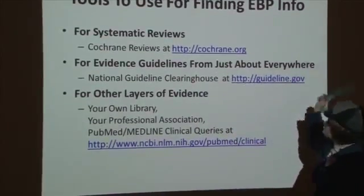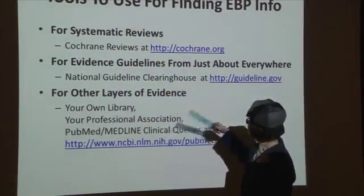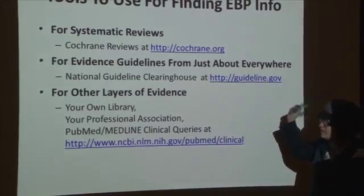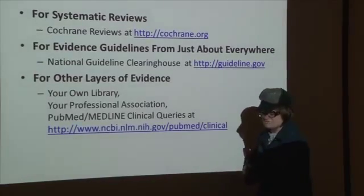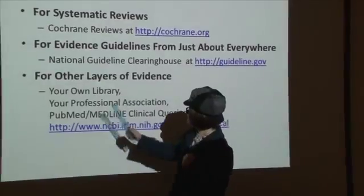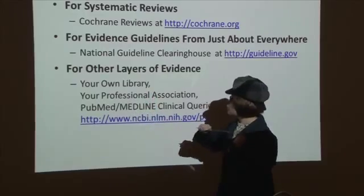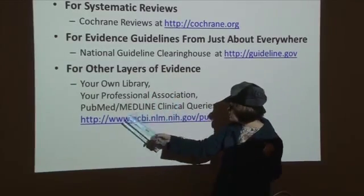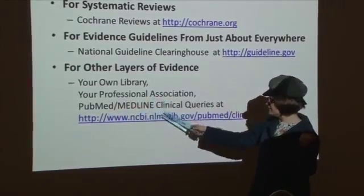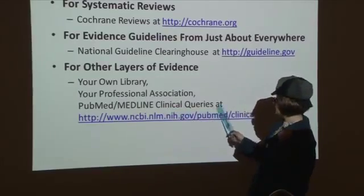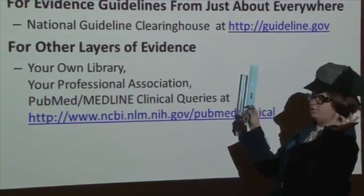For finding evidence guidelines from just about everywhere, you can use the National Guideline Clearinghouse at guideline.gov, a service of the US government, which brings together guidelines from all over the planet for treatment recommendations. For other layers of evidence, you can use resources from your own library, your professional association, and also PubMed's Medline interface — another US government service. You can go into PubMed and click on Clinical Queries.